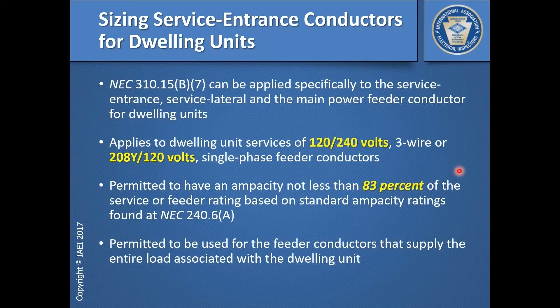You can reduce those ampacities using that 83% load calculation and come up with a smaller size service entrance conductor for a particular rating than what you might get using your standard ampacity ratings at table 310.15(B)(16). For example, let's say we had a 200-amp rated service disconnect at a dwelling unit, which is very common.